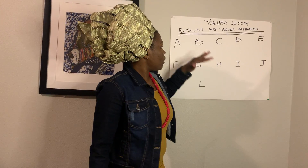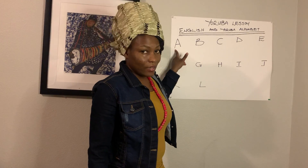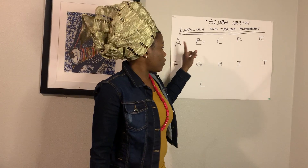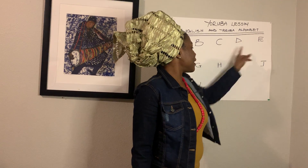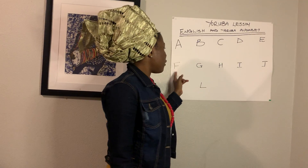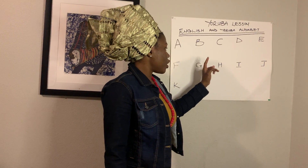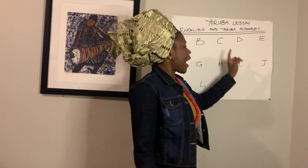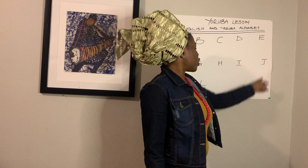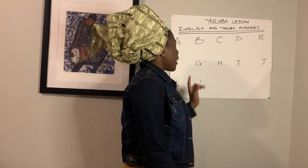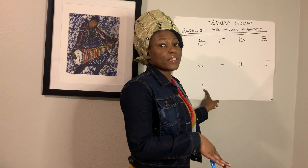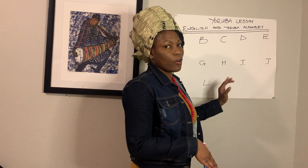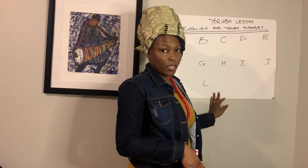In English we have: A, B, C, D, E, F, G, H, I, J, K, L. We will be stopping over here for today — so we're covering A through L.